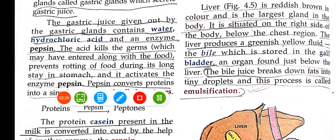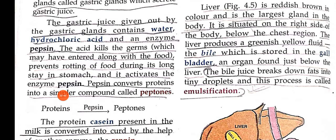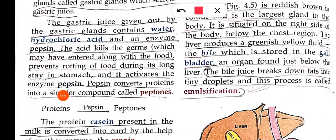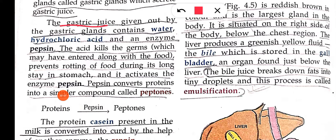Gastric juices contain water, hydrochloric acid, and enzymes. Hydrochloric acid is a very strong acid — if it touches any part of the body, it can harm it. The gastric juices also contain an enzyme called pepsin.